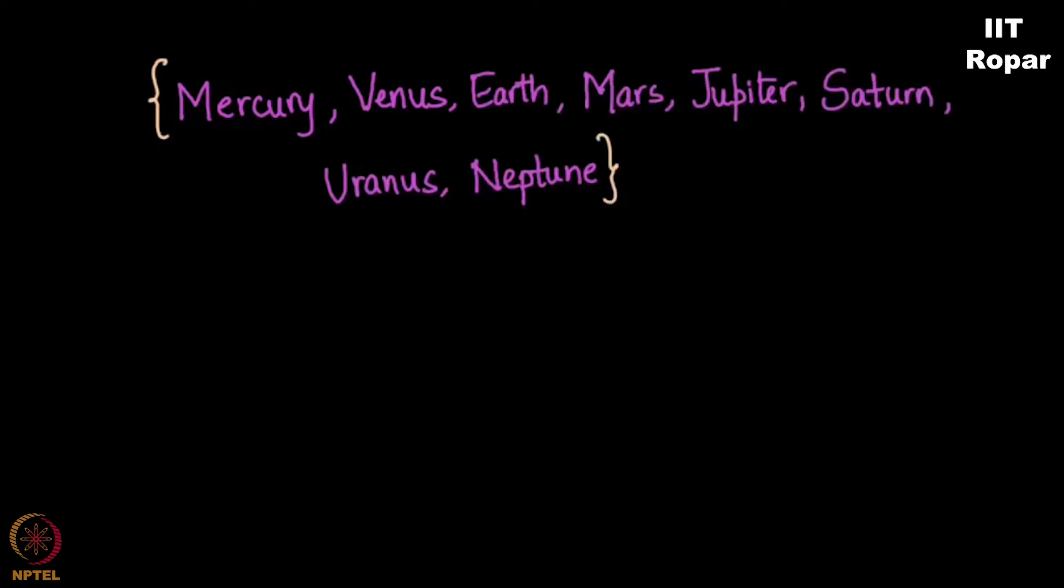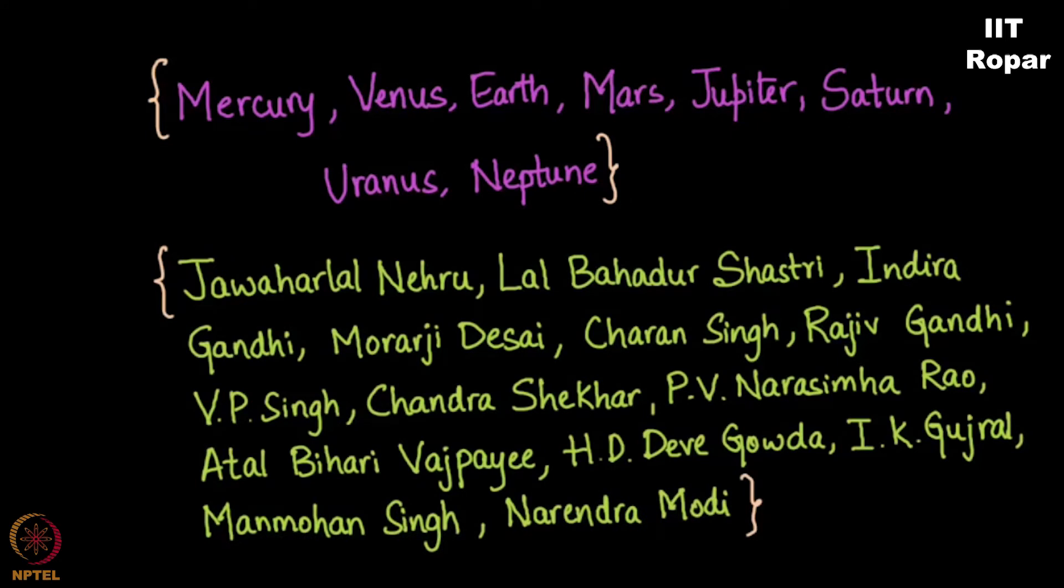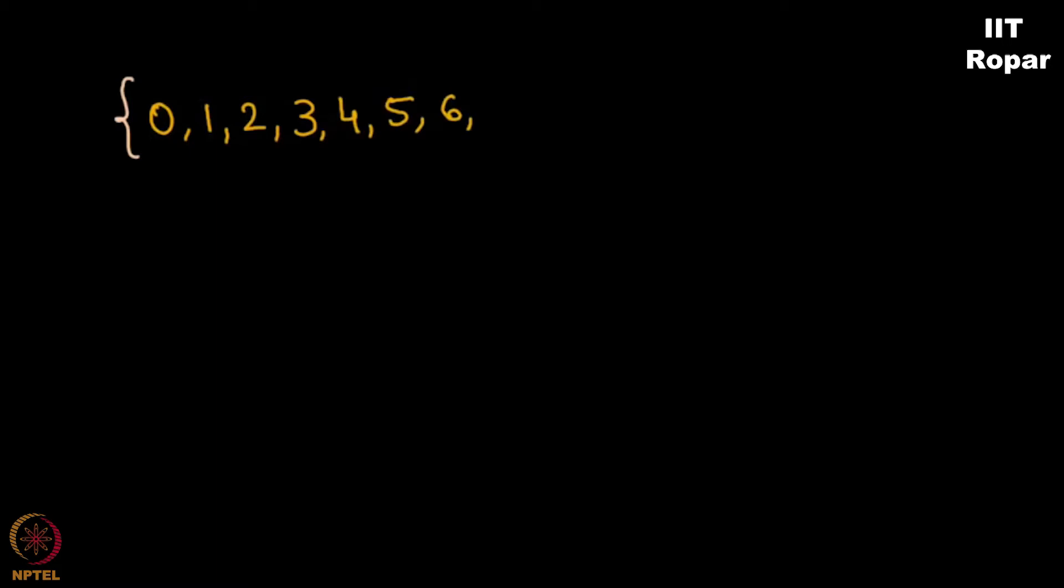Let me consider the set of all planets: Mercury, Venus and so on. I write all of them. And then let me consider the set of all prime ministers of India. You see this is the list. Let me consider the set of all single digit numbers which is 0, 1, 2, 3 up to 7, 8, 9.